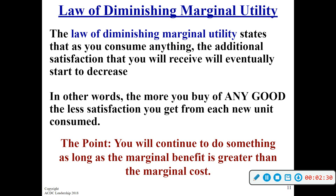A big concept that comes up quite a bit throughout the course is diminishing marginal utility. If we break down that term: diminishing means to get smaller; marginal — you're going to add one and look for the change; utility is just the happiness, benefit, satisfaction, joy, whatever you get out of something. I like to teach utility as happiness because it kind of makes more sense, but we're actually going to put a quantitative measure on utility here in a little bit.